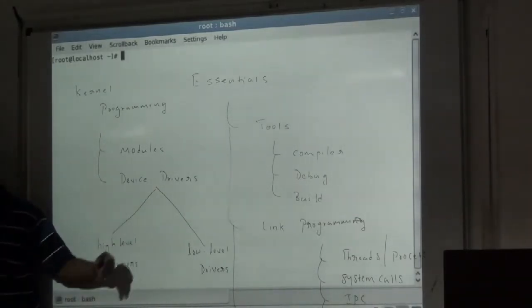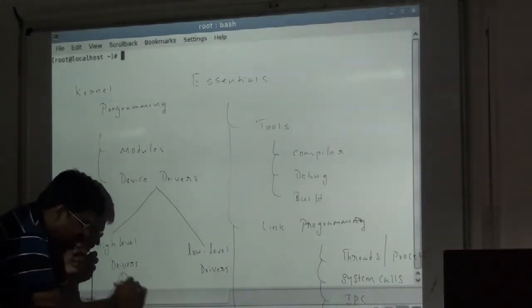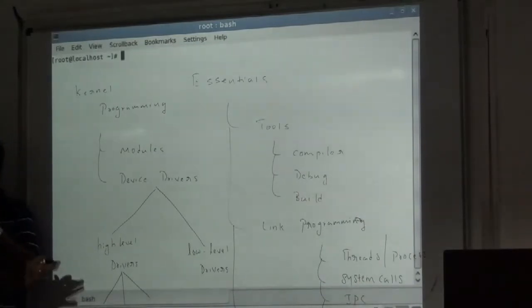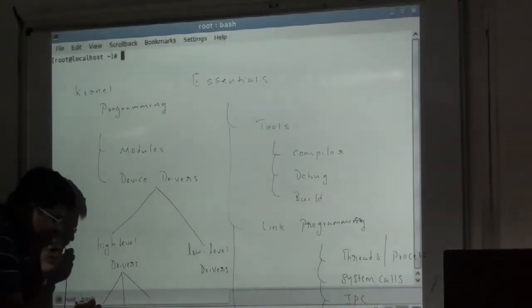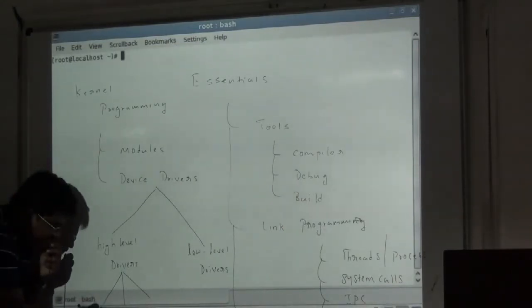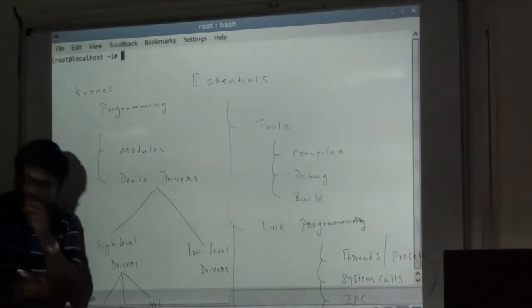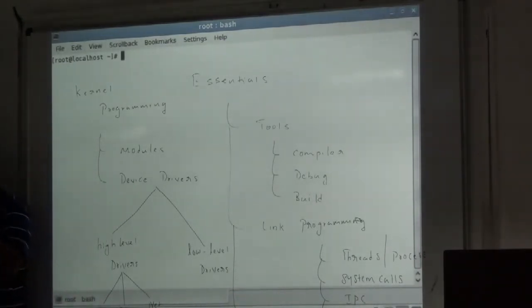So this is all about application to driver interaction. Because driver is in kernel, application is in some other memory space. In this again, Linux has got three categories for implementing this part of the driver. There are three different models or three different approaches of writing code. The first approach is called CAD driver. Then we have something called block driver. And for communication devices, we have something called network driver. These are three different ways of writing code.